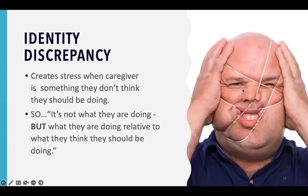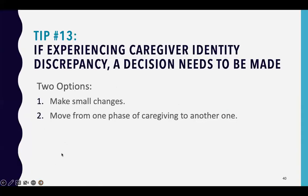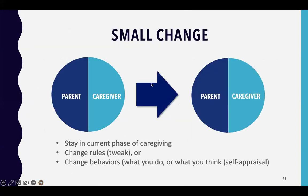I love this slide because it illustrates how we feel when we have identity discrepancy. Again, it's not what you're doing, but what you're doing relative to what you think you should be doing. When that happens, you have two options: you can make a small change, which keeps you in the same caregiver phase, or you can move to the next phase. To stay in your current phase, you change your rule, tweak your rule, or change your behavior or self-appraisal — but you don't take on any more caregiving responsibilities or roles.